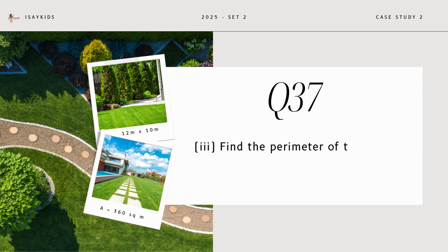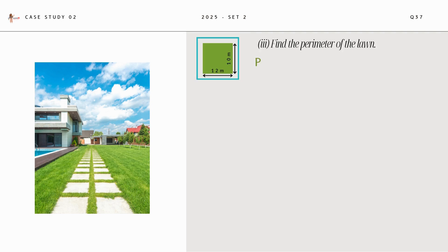Find the width, find the perimeter of the lawn. Now, perimeter is given by 2 times length plus breadth. Substituting the values, we get perimeter as 44 meters.